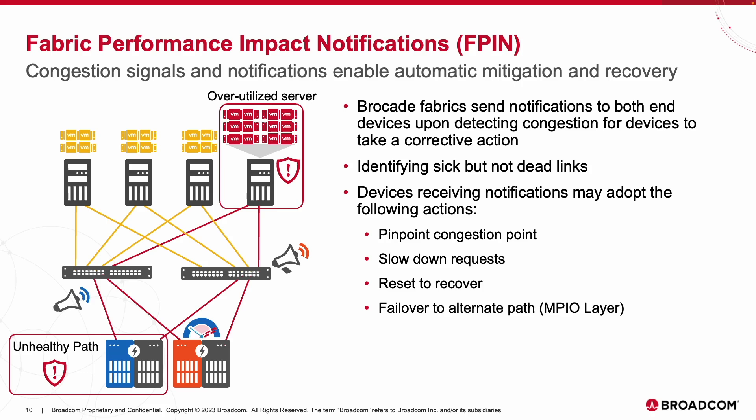Gen 7 hardware transmission provides more granular notification intervals and guaranteed delivery. When N devices receive event-triggered Fabric Notifications, they have the option to autonomously respond if configured to do so. They can pinpoint congestion and notify peers, slow down requests in the case of oversubscription, reset to recover, or non-disruptively failover to a healthy path when there are intermittent issues on a currently used path.